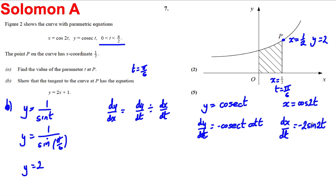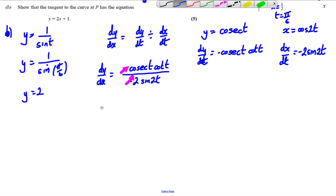So dy by dx is therefore dy by dt, which is negative cosec t cot t, all divided by negative 2 sine of 2t. Now the negatives cancel, so I can divide top and bottom by negative 1. What else can I do? Well, what I could do is now I'm going to substitute in pi by 6. So dy by dx when t is equal to pi by 6 is as follows.